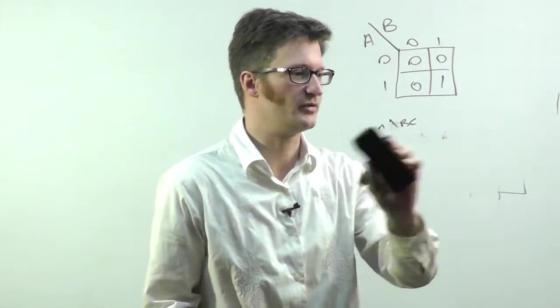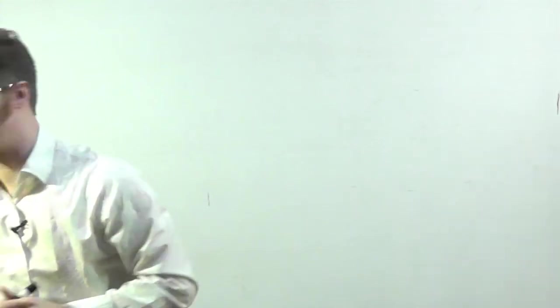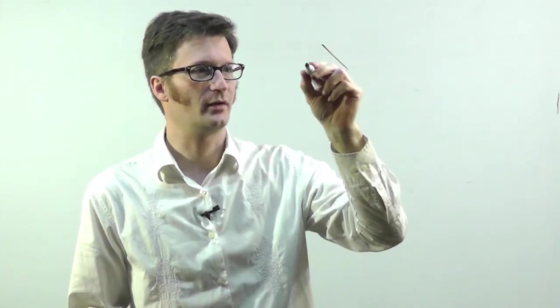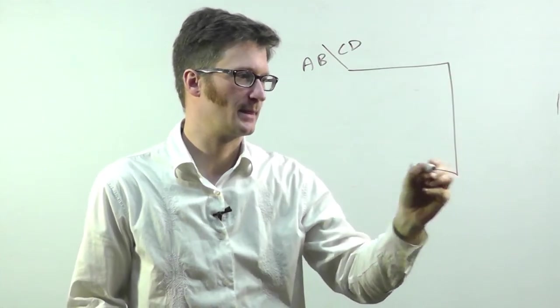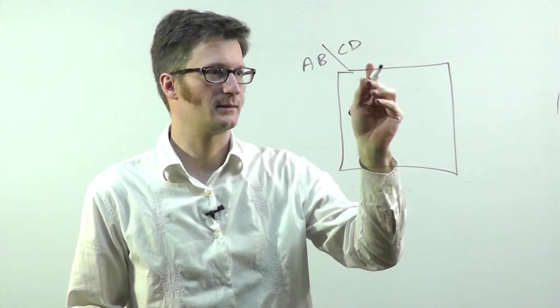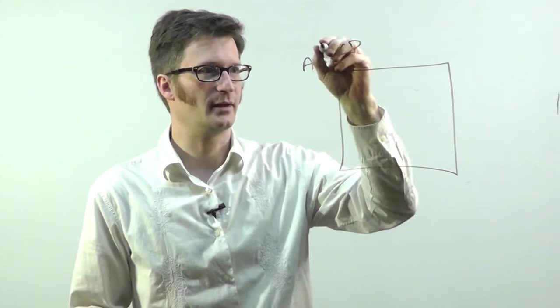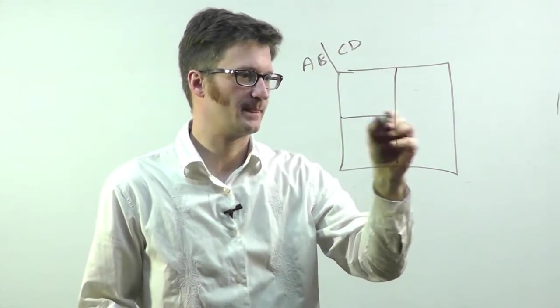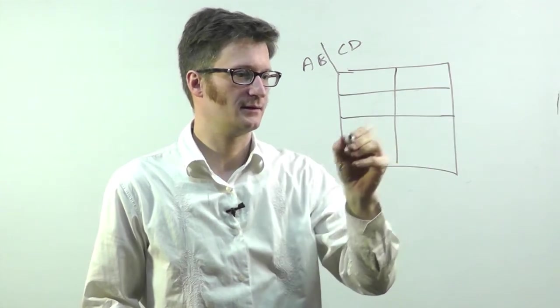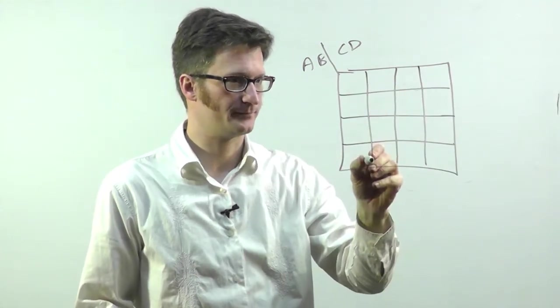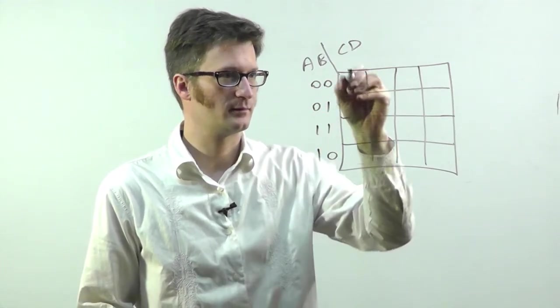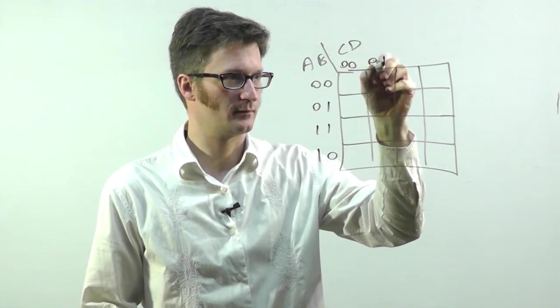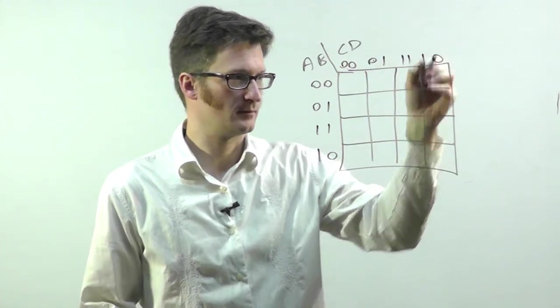Now I'm just going to jump to a four-variable Karnaugh map, because that's when it starts to get useful. So if I have A, B, C, D. I didn't draw that the best. So remember, gray code.